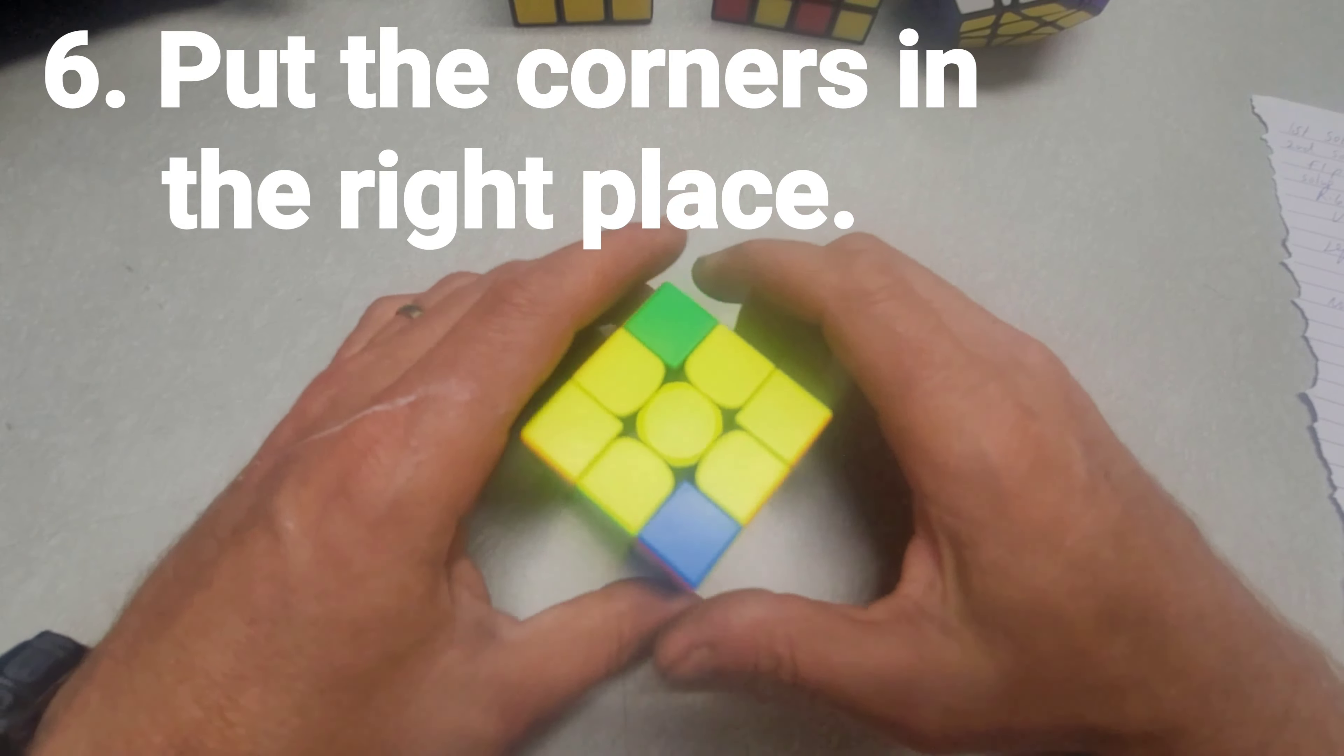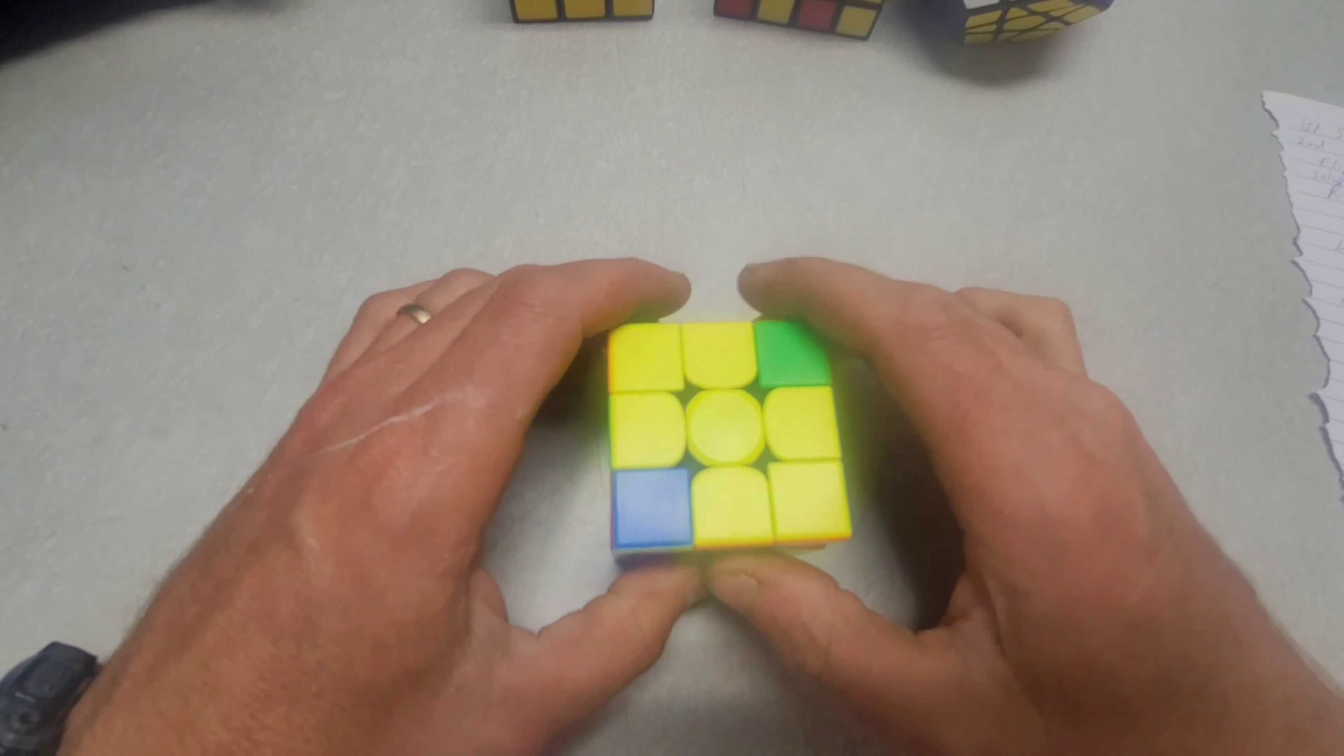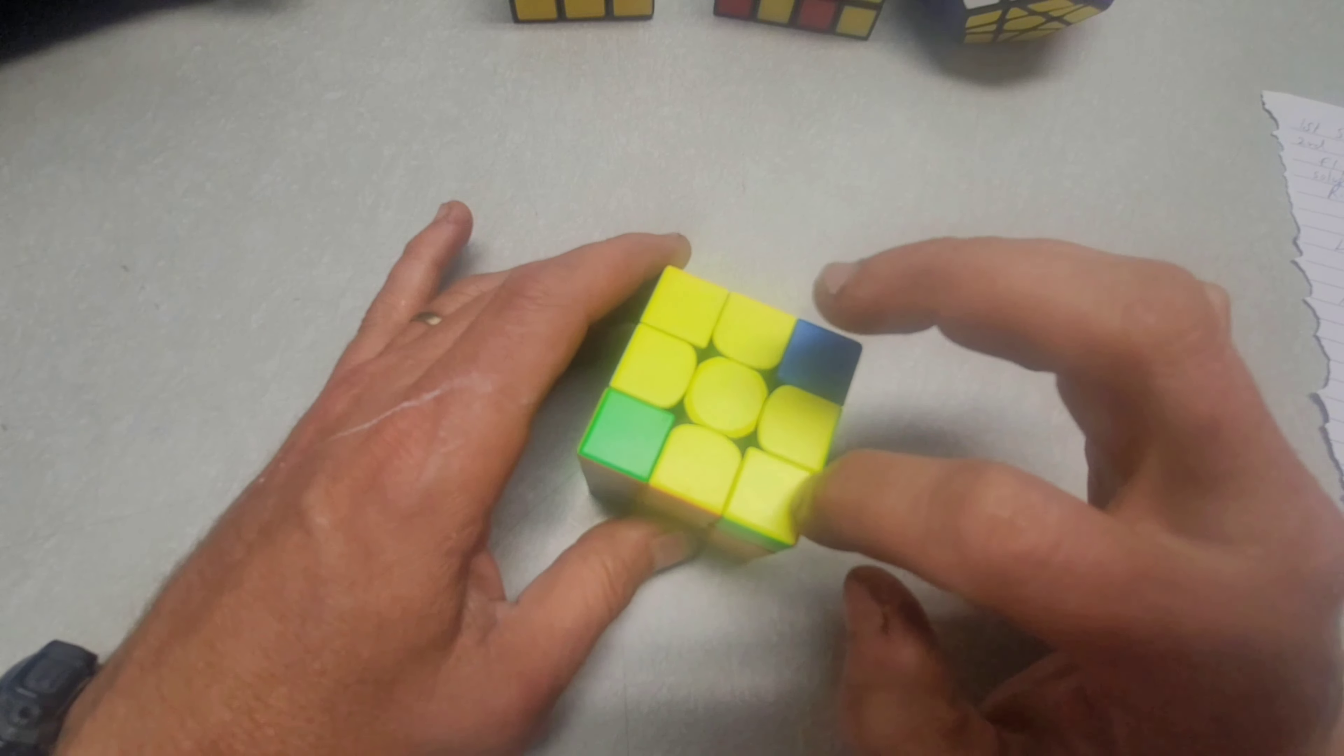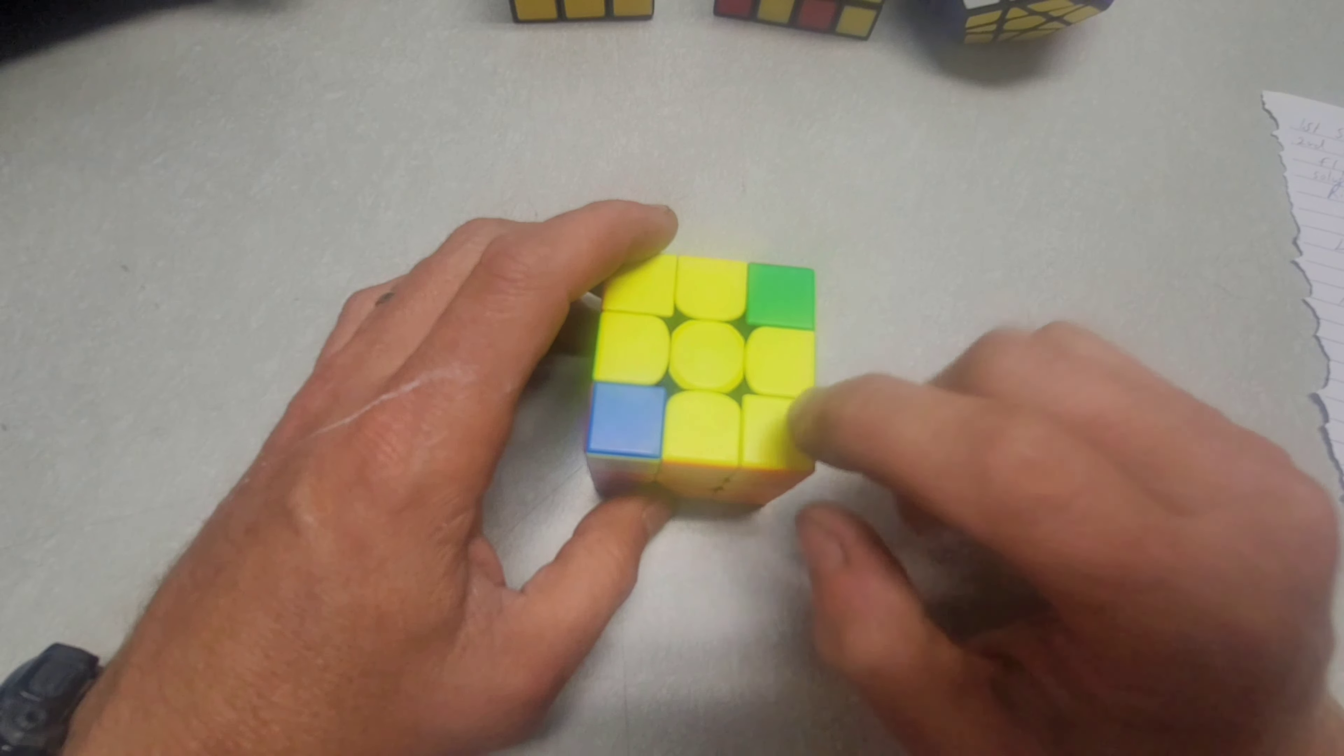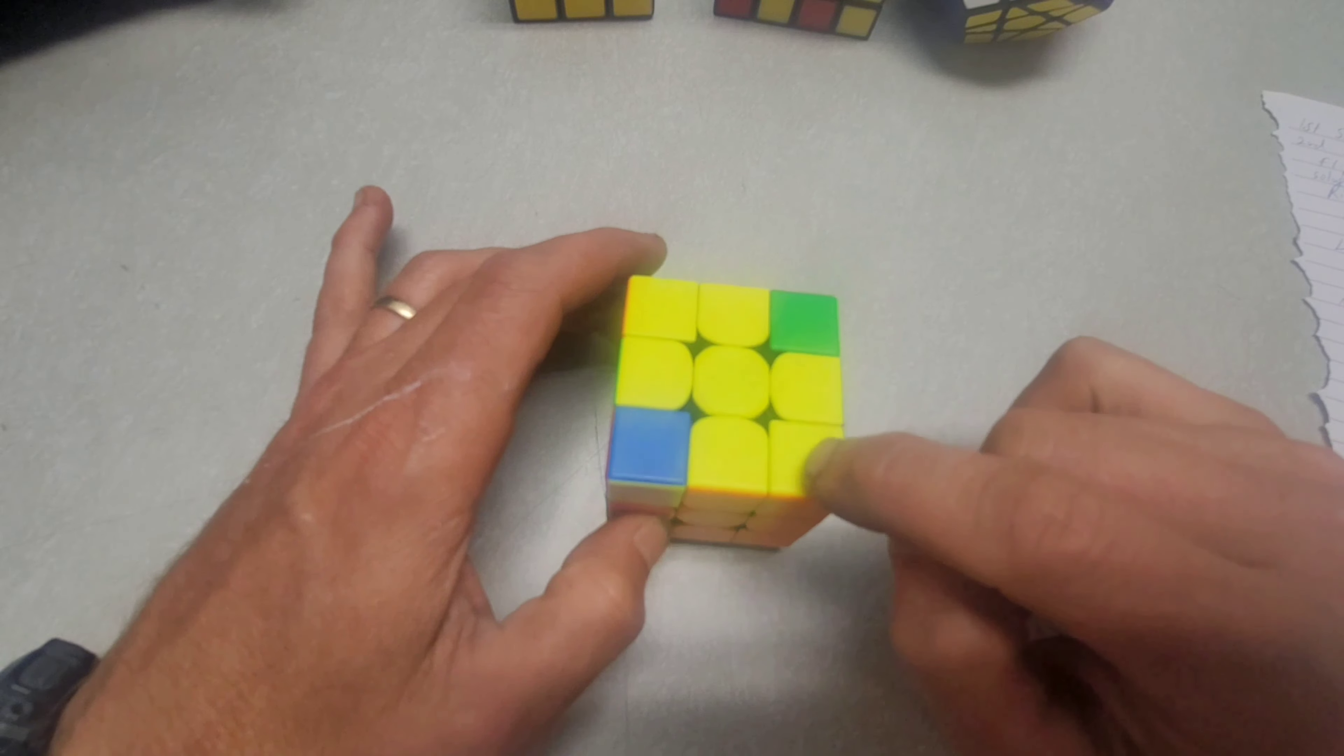All right, now we're ready to put the corners in the right place. So what we're going to do, we're going to look around here. There's usually going to be one side that's going to be right, or it could be none, or it could be all of them in the right place. So in this case, we've got one in the right place here.